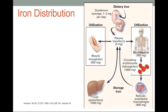First I'll talk about iron distribution. The major role of iron is mainly to carry oxygen as a part of hemoglobin.